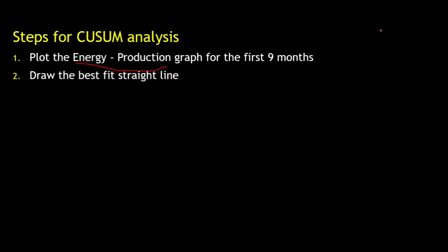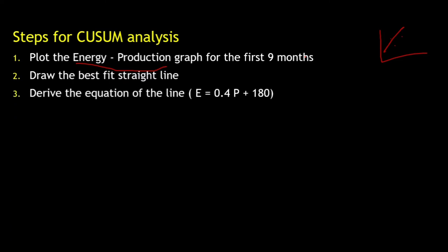Then draw the best-fit line. Once you have plotted the graph with some random scattered points, you need a best-fit straight line through them — that is the energy with respect to production graph. Then derive the equation for this line. For this particular question, the equation is E = 0.4P + 180. This is actually Y = MX + C, where M is the slope and C is the intercept.